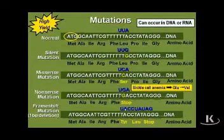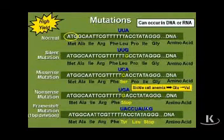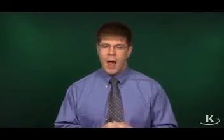When there is a frameshift mutation, the end result is that downstream of the mutation, incorrect amino acids are incorporated into the protein. Then usually what happens is premature truncation of protein synthesis, because if you're out of frame, you're probably going to hit a stop codon. In frameshift mutations, you get incorrect amino acids downstream of the mutation and then early truncation of protein synthesis.